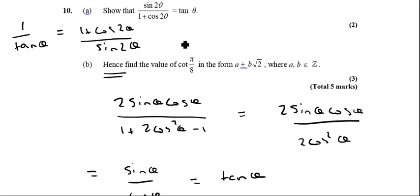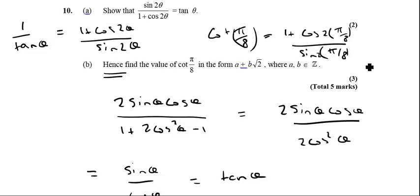And then basically I'm finding cot of π over 8. And remember, this is cot, so if I can rewrite that as cot π over 8, that's equal to 1 plus cos 2 lots of π over 8 all over sine of 2 lots of π over 8.